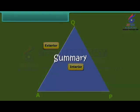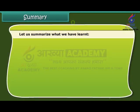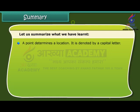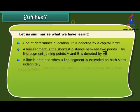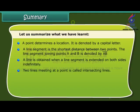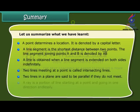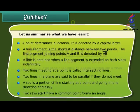Summary: A point determines a location and is denoted by a capital letter. A line segment is the shortest distance between two points; the line segment joining points A and B is denoted by AB. A line is obtained when a line segment is extended on both sides indefinitely. Two lines meeting at a point are called intersecting lines. Two lines in a plane are said to be parallel if they do not meet. A ray is a portion of a line starting at a point and going in one direction endlessly. Two rays starting from a common point form an angle.